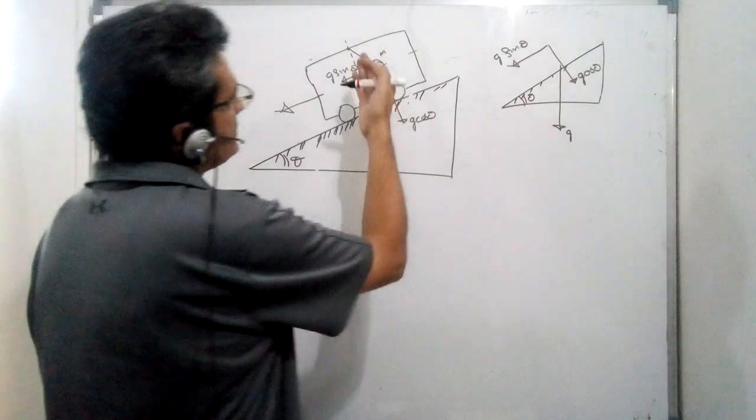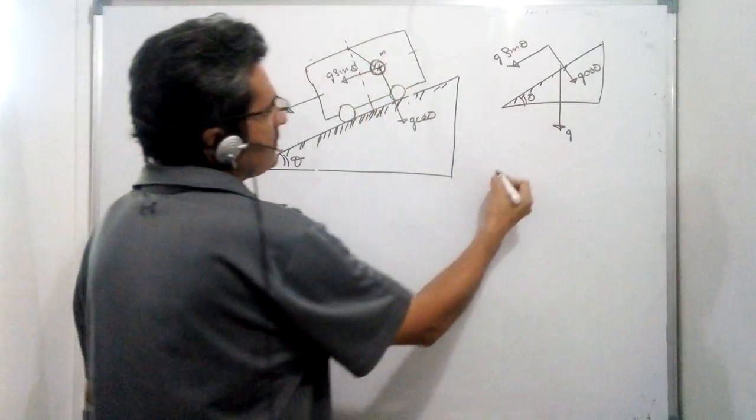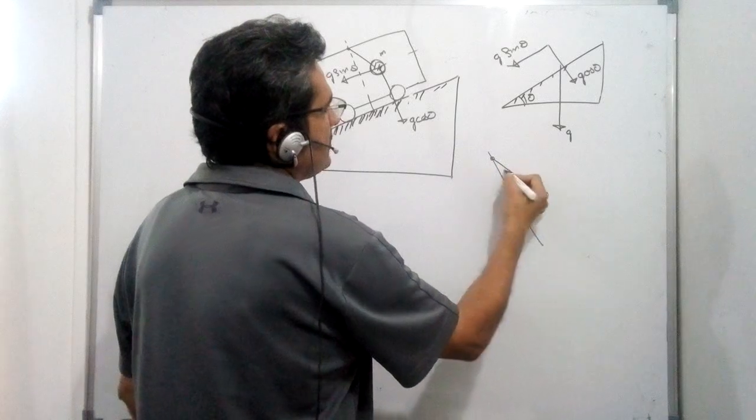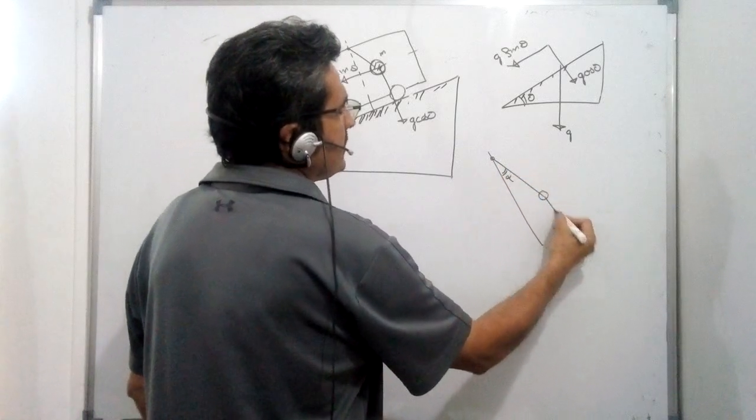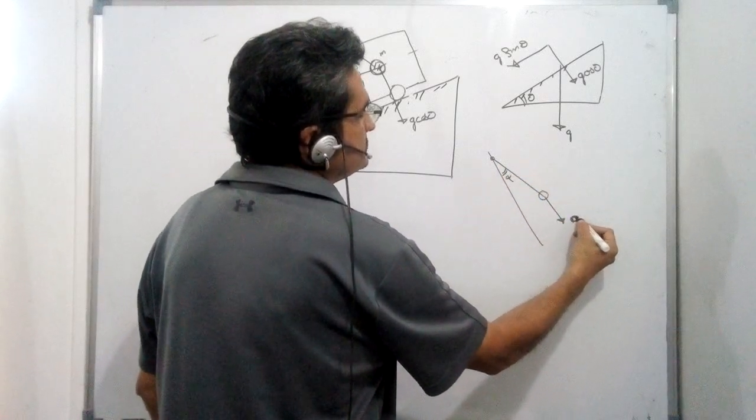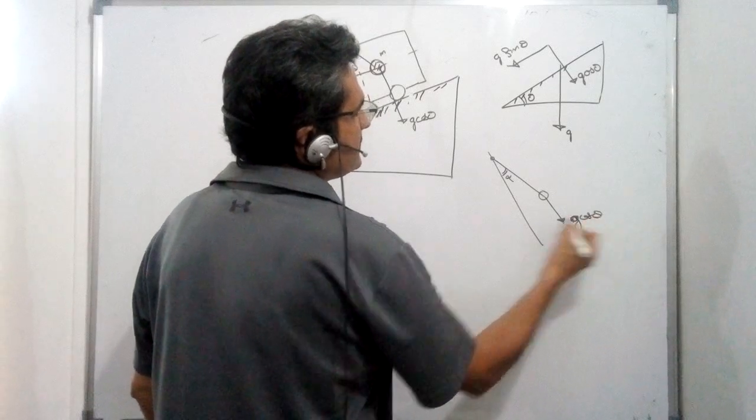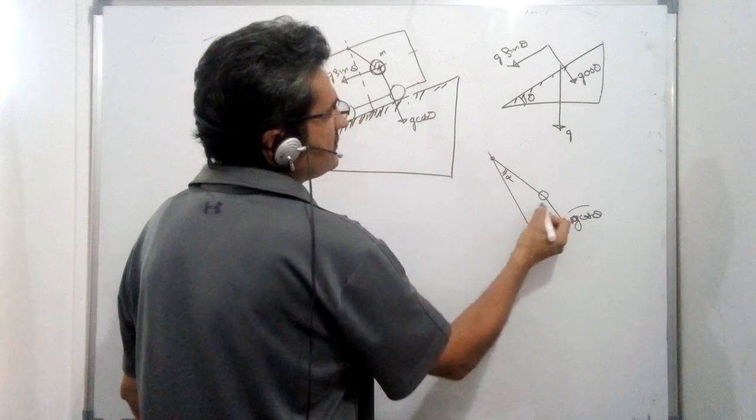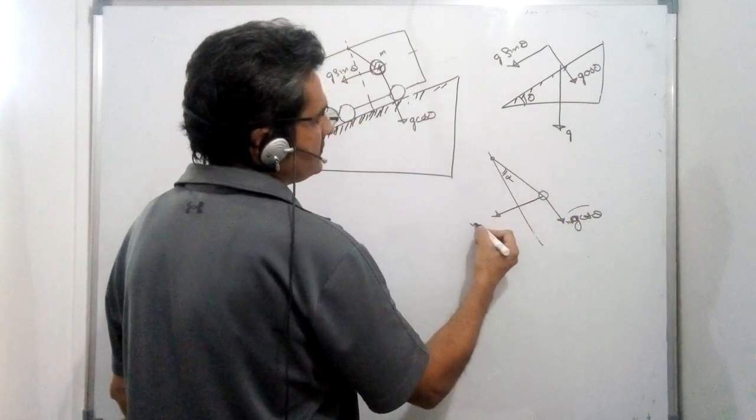If we look at the pendulum with some small displacement alpha, the acceleration forces here are mg cos theta perpendicular and mg sin theta horizontal.